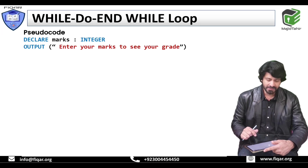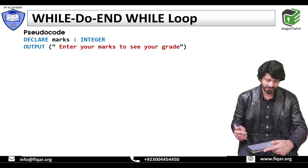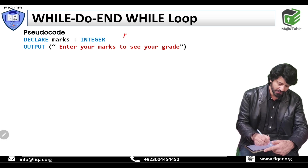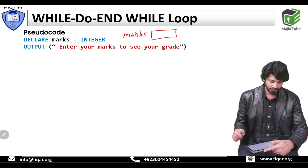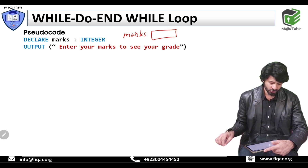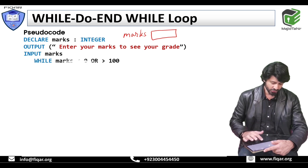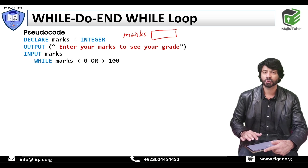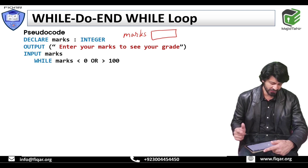The pseudocode: declare marks. We created a variable with the declare command. Marks is the variable where the user can input any value. The prompt statement says: enter your marks to see your grade. The user is going to input marks to see their grade.